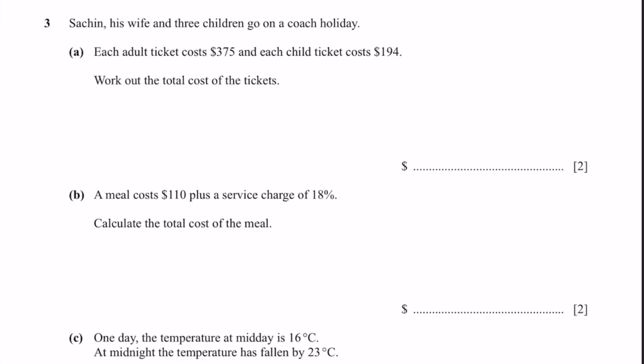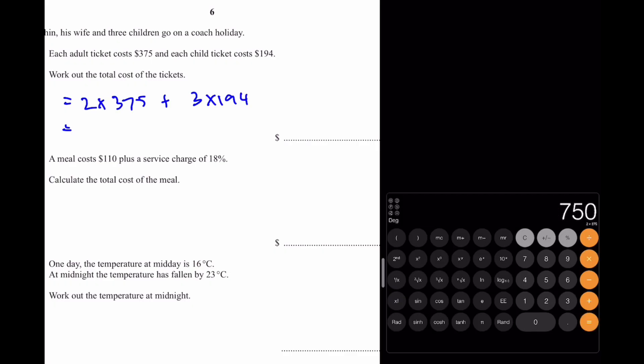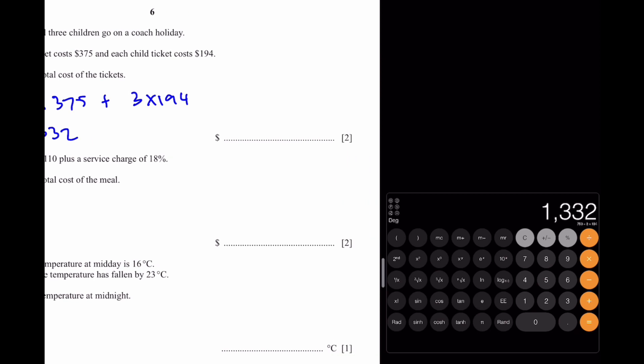Question 3: Sachin, his wife, and three children go on a coach holiday. Part A: Each adult ticket costs $375 and each child ticket costs $194. Total cost = 2 × $375 + 3 × $194 = $750 + $582 = $1,332.